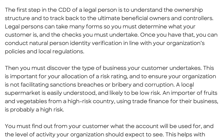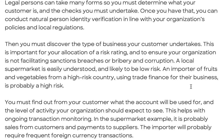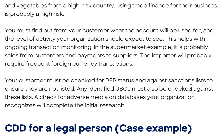The first step in the CDD of a legal person is to understand the ownership structure and track back to the ultimate beneficial owners and controllers. Legal persons can take many forms, so you must determine what your customer is and the checks you must undertake. Once you have that, you can conduct a natural person identity verification in line with your organization's policies and local regulations. Then you must discover the type of business your customer undertakes — this is important for your allocation of the risk rating to ensure your organization is not facilitating sanctions breaches, or bribery or corruption.